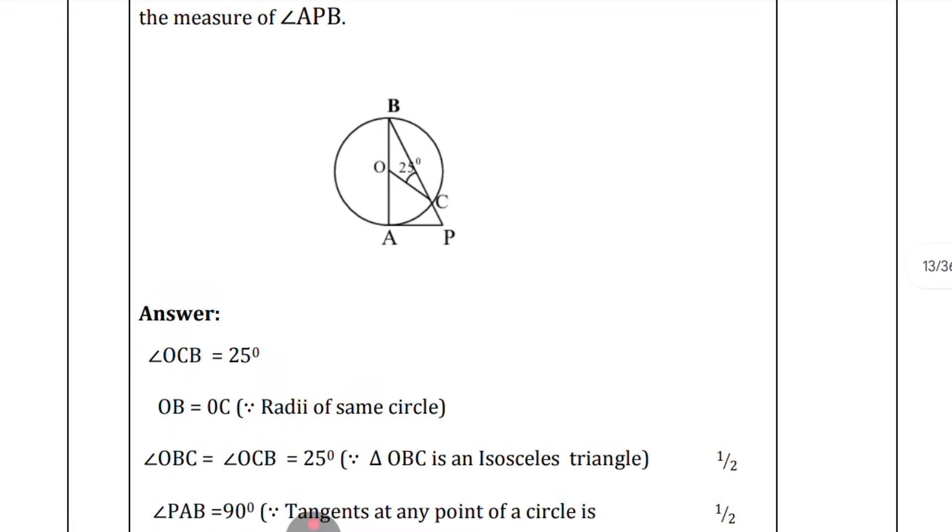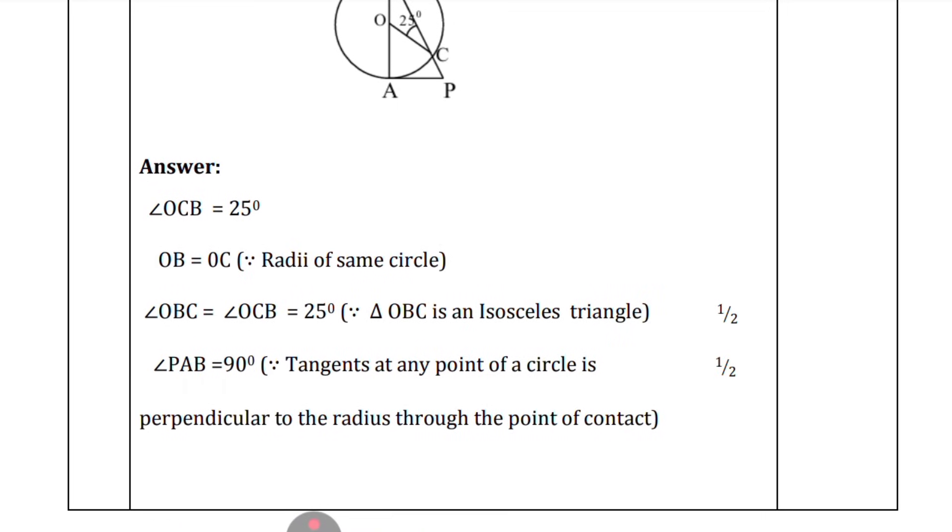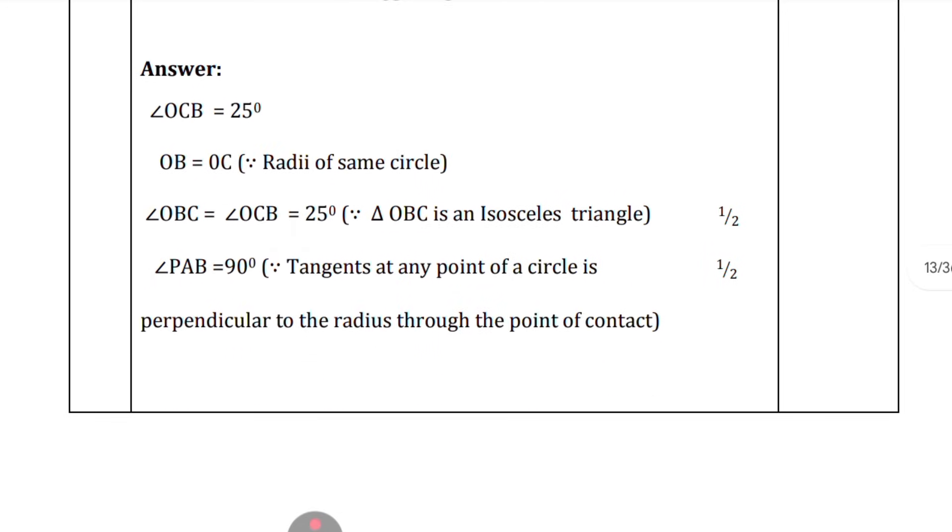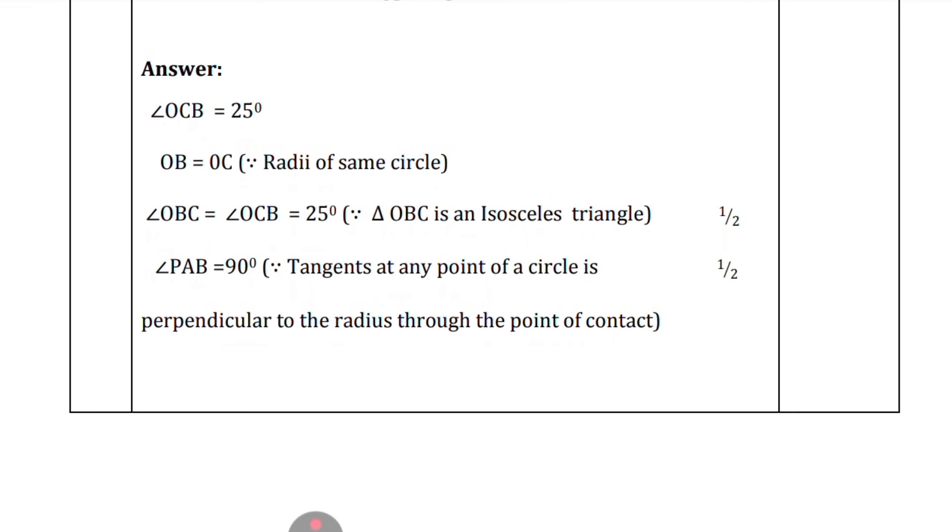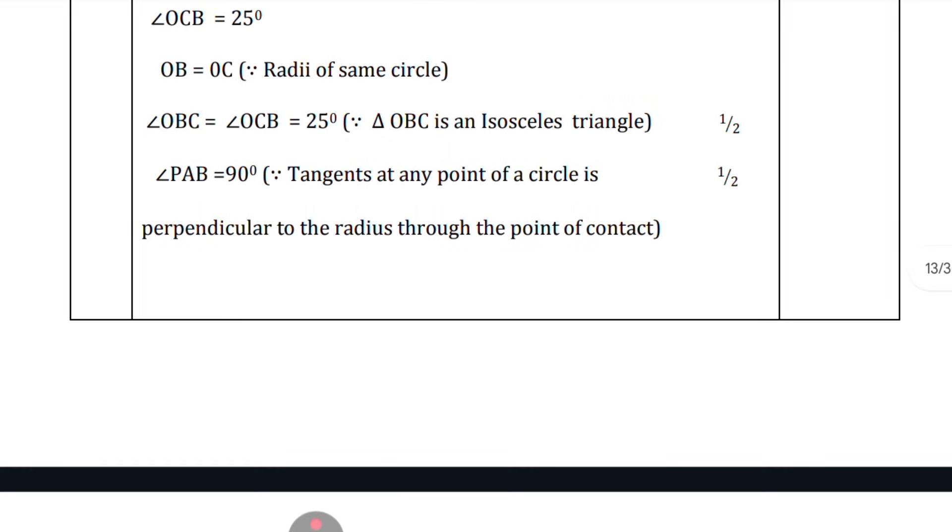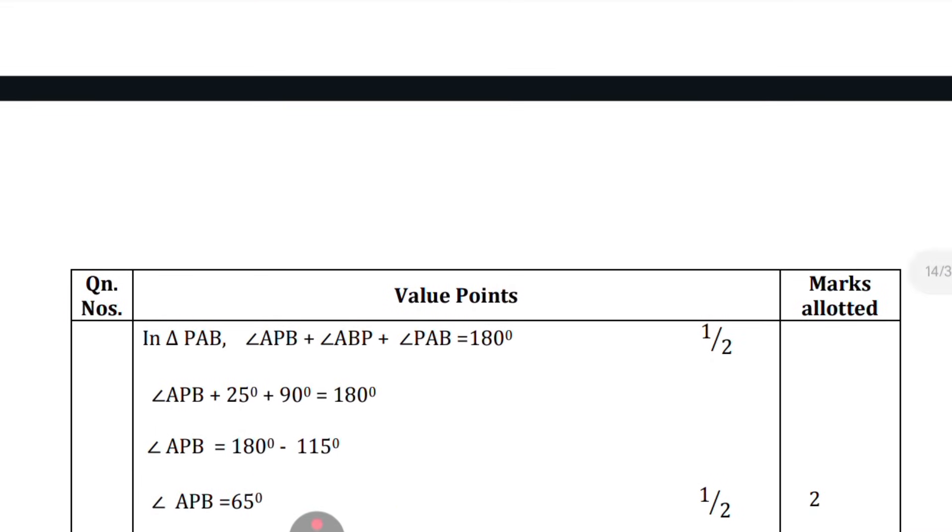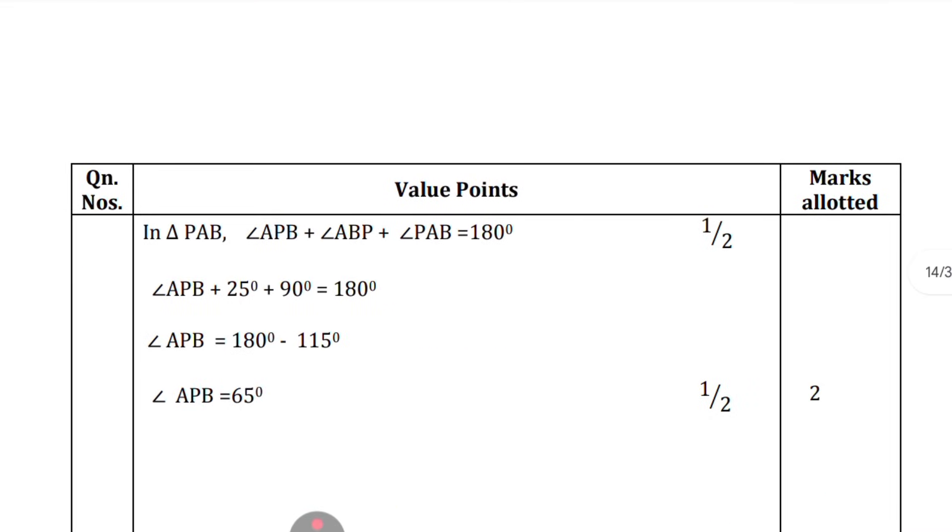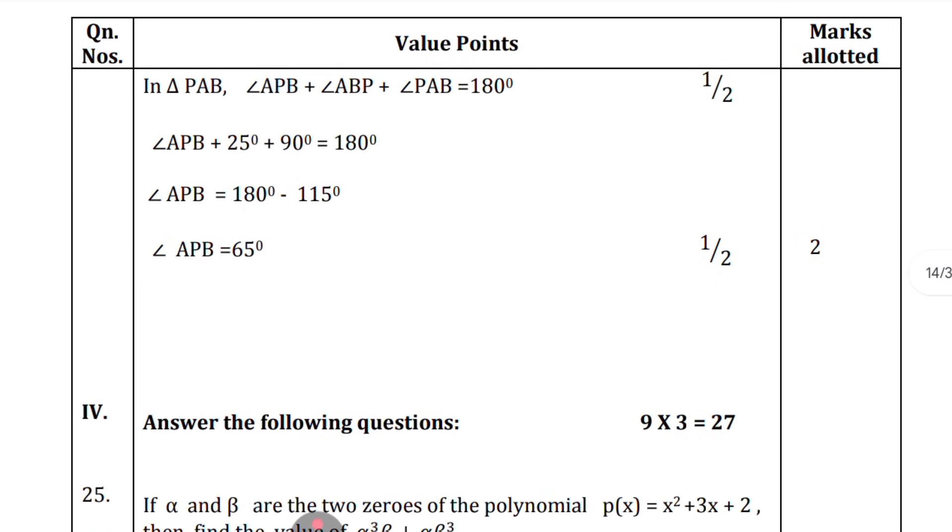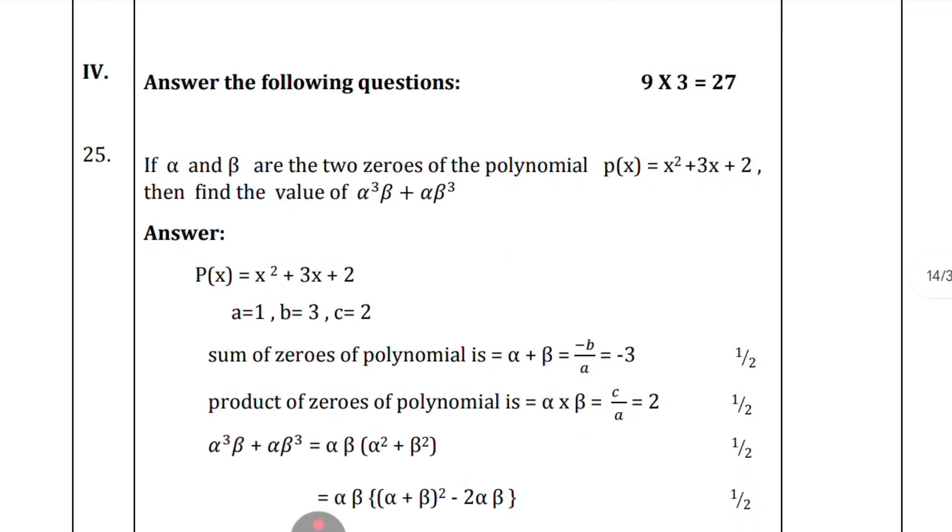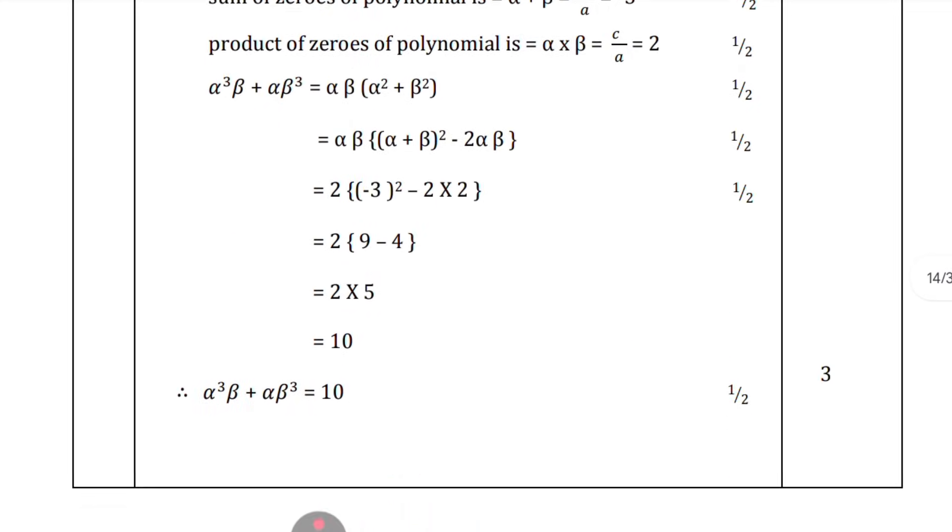You can see how I have written: radii of same circle in bracket, triangle ABC is an isosceles triangle, tangents at any point of circle is perpendicular to the radius through the point of contact. You should mention these points in the bracket so the evaluator, the teacher correcting the paper, will understand the systematic nature of your approach to the questions and the answers you have written in the answer booklet.